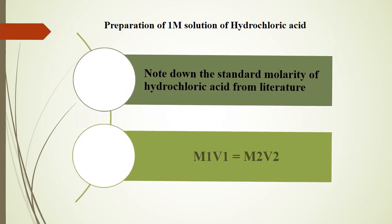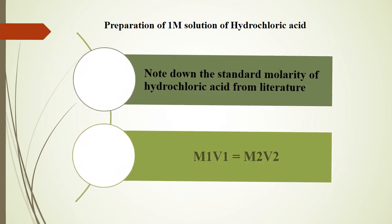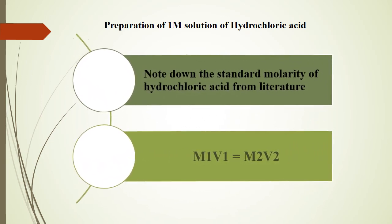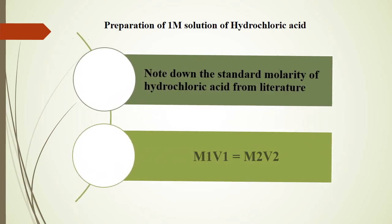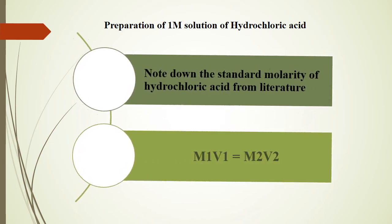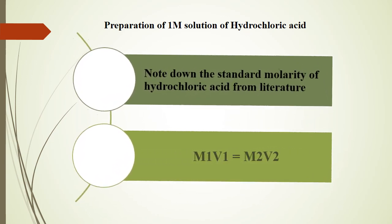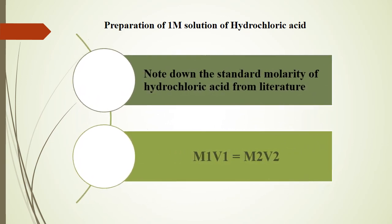Use the following formula to find out the volume of hydrochloric acid which should be used to prepare one molar solution. In this formula, M1 is the standard molarity noted from literature. V1 is the volume to be taken from the concentrated acid bottle. M2 is the molarity you want to prepare — one in this case. V2 is the required volume, which can be 1000 ml, 500 ml, 750 ml, 250 ml, 200 ml, or any other value according to interest.